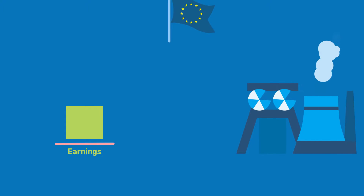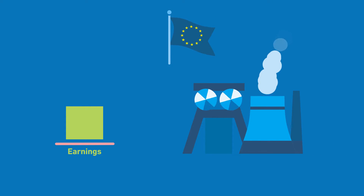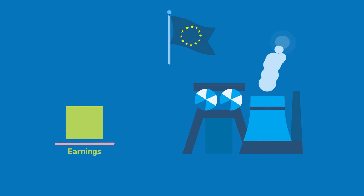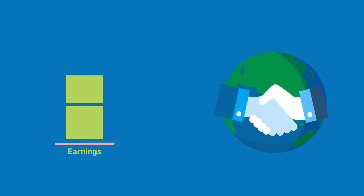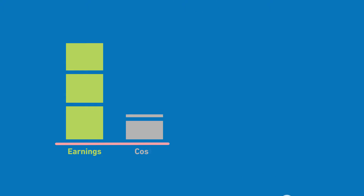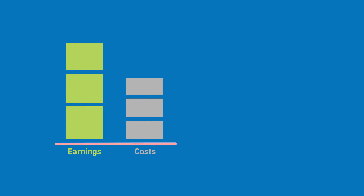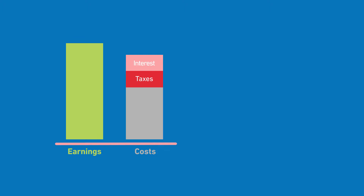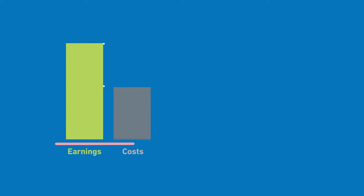The basis for EBIT and EBITDA are our total earnings — that is, earnings from the segments European Generation, Global Commodities and International Power — which are then compared with the costs. EBIT stands for Earnings Before Interest and Taxes. Therefore it compares all earnings and costs but does not take into account interest or taxes.